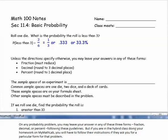On any probability problem, you may leave your answer in any of these three forms: fraction, decimal, or percent, following these guidelines. But if you are in my hybrid class doing your homework on MyMathLab, you have to follow the instructions if they ask you for a particular form for that problem, or else the system will count it wrong. But for me, any quizzes and tests, any of these forms is fine for any problem.